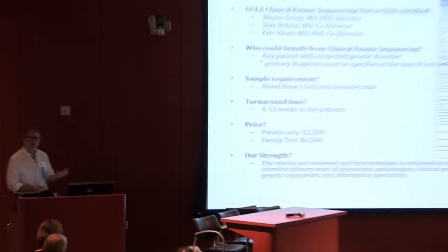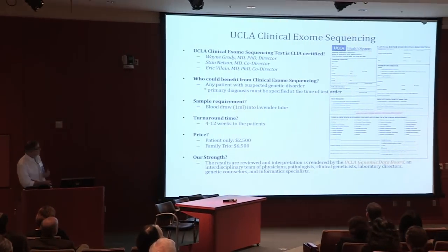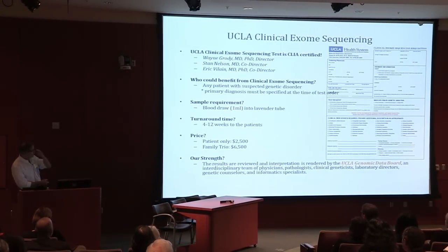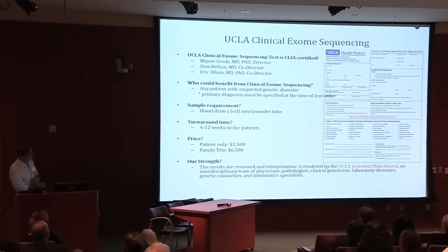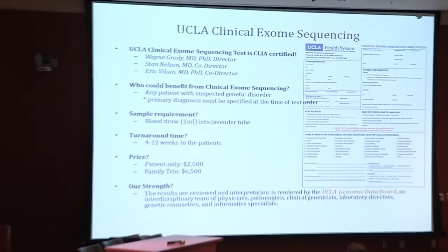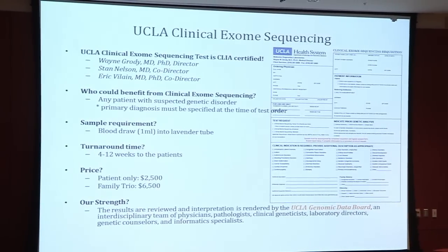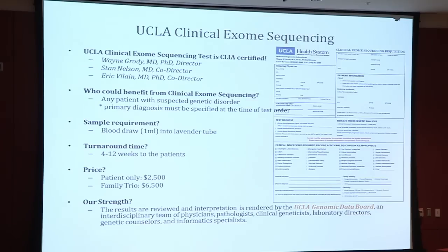This is what a requisition looks like. As Nagme was urging people in the audience: please fill it out and put specific information in — that's critical. It requires simply a blood draw, at least a milliliter, which is more than sufficient for genomic DNA. The turnaround time may get shorter in the future, but typically it's on the order of a few months, which is fairly typical for these sorts of panels.